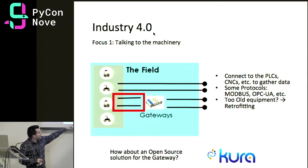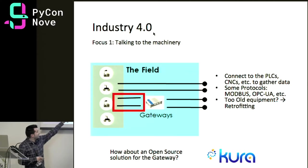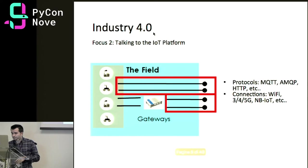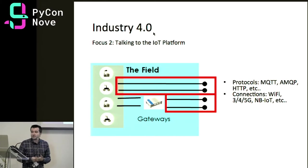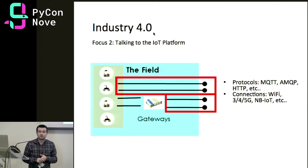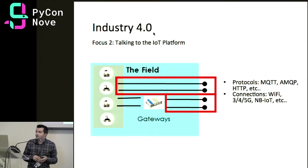We can run open source software on gateways. One solution supported by the Eclipse IoT community is called Eclipse Kura, a Java-based solution. Once data is collected, we need to send it to a server using a standard protocol. We can use MQTT or AMQP — both are message queue frameworks, and MQTT is a lightweight, very common solution. For connectivity, we can go for Wi-Fi, 3G, 4G, 5G, or the upcoming narrowband IoT.